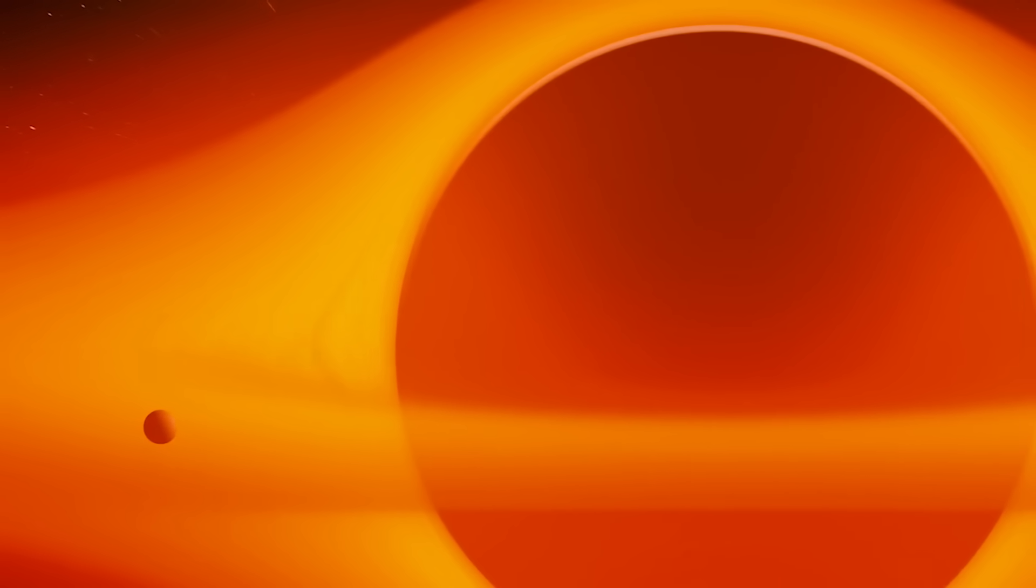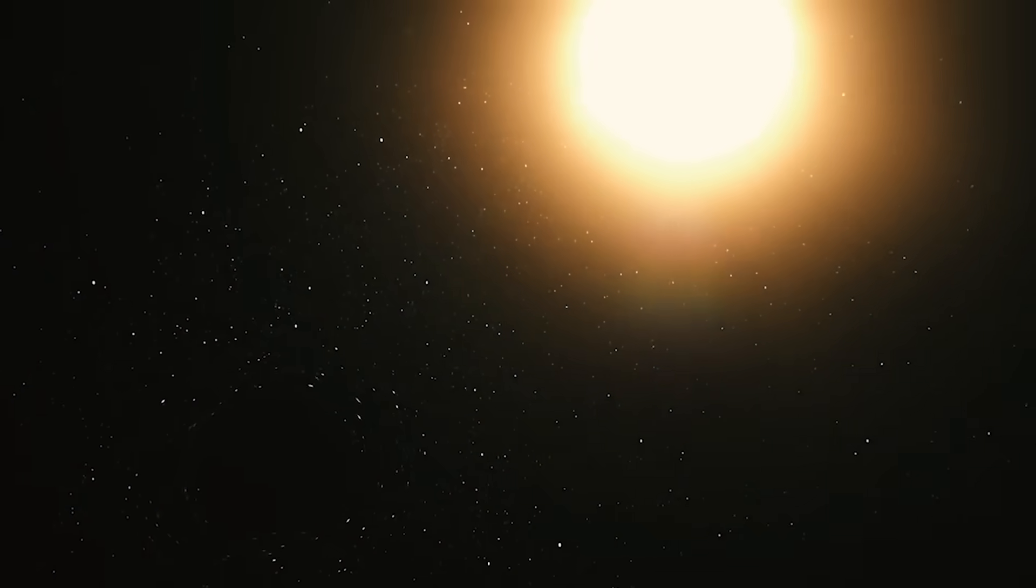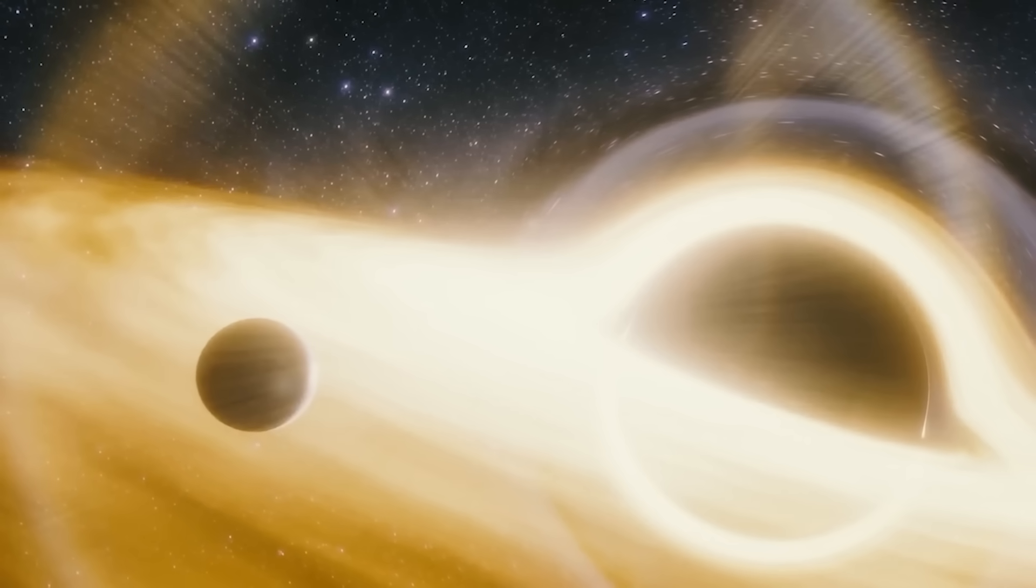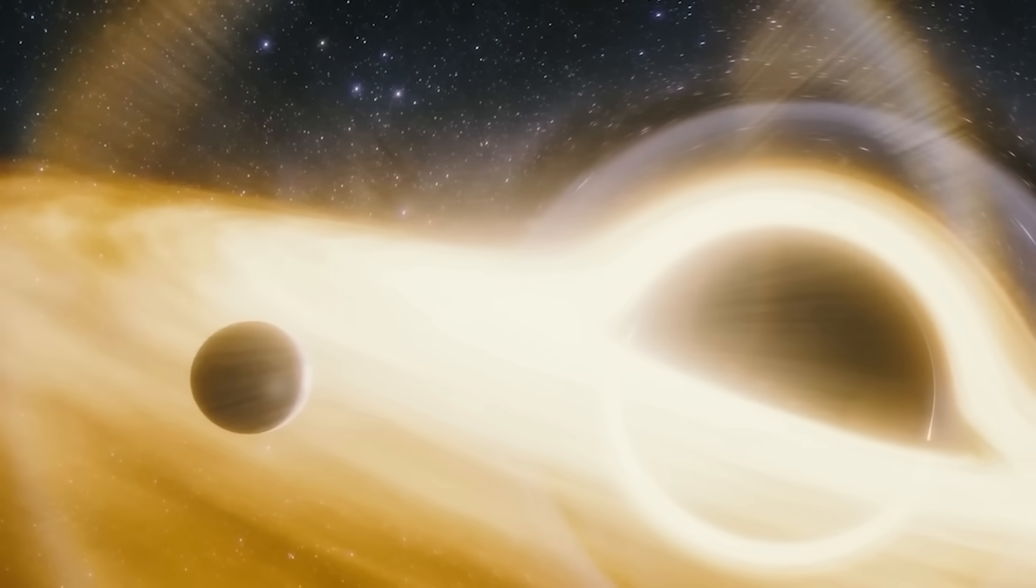These black holes merged and grew larger, eventually exerting their gravitational pull on nearby stars, shaping them into the familiar disk or spiral structures we associate with galaxies.